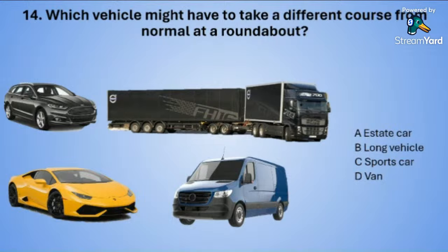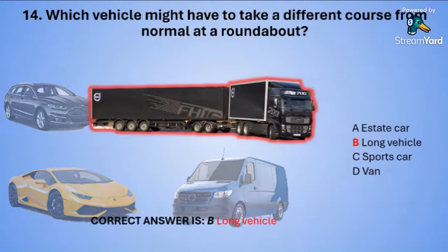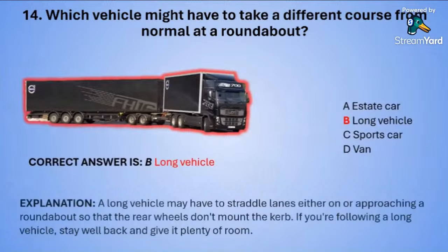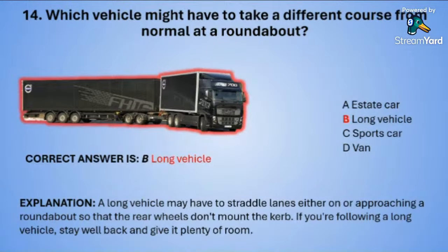The correct answer is B — a long vehicle. A long vehicle may have to straddle lanes either on or approaching a roundabout so that the rear wheels don't mount the curb. If you are following a long vehicle, stay well back and give it plenty of room.